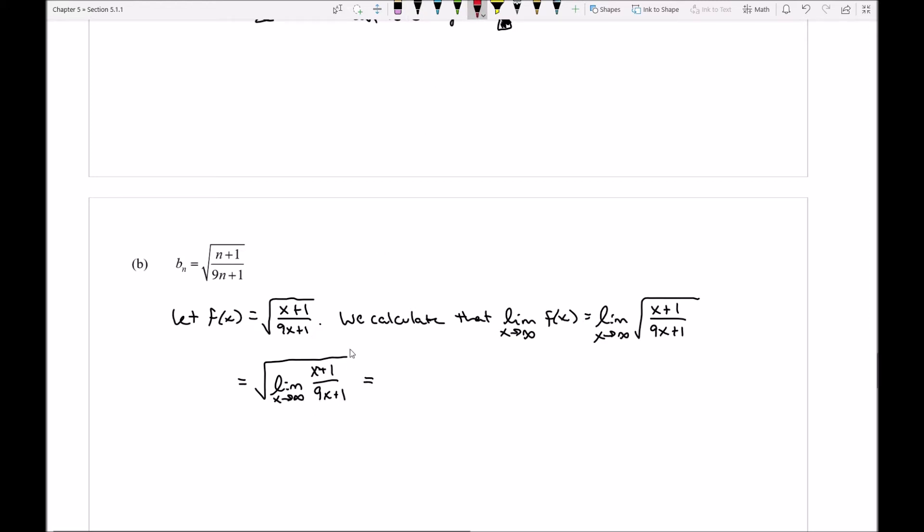At this point, I could easily go ahead and maybe use something like L'Hopital's rule. Notice my fraction here is of the form infinite over infinite. So I know this is going to turn into the square root of the limit as x approaches infinity of 1 over 9.